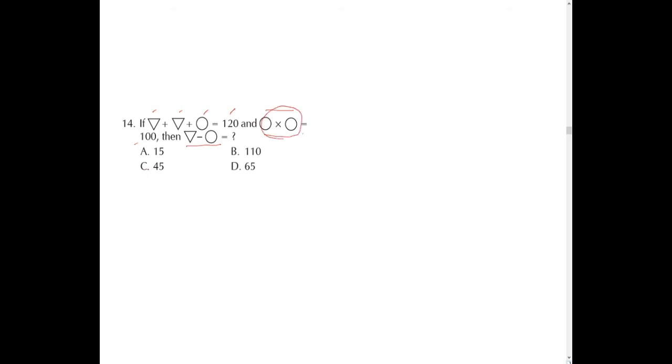Question number 14: if two triangles plus one circle equals 120, and the product of two circles equals 100, what is the value of triangle minus circle? First, from circle × circle = 100, we know circle = 10, since 10 × 10 = 100. Now put the value of circle (10) into the first equation to find the value of the triangles.